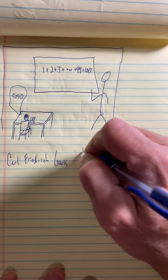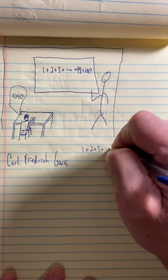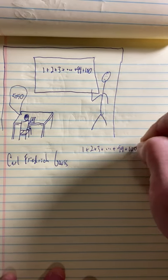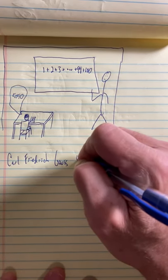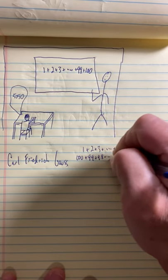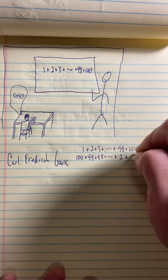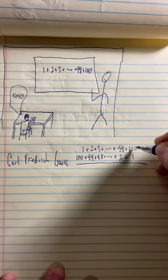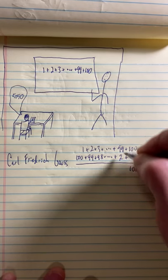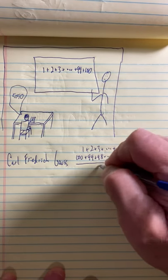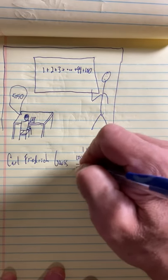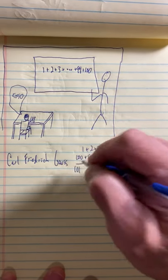Well the way Gauss explains it is he just visualized this sequence this way. He visualized adding it to itself backwards. If you add it to itself backwards what will you get with each subsequent term? 1 and 100 is 101. 99 and 2 is 101. 98 and 3 is 101. And that's true for all of the numbers in the middle.